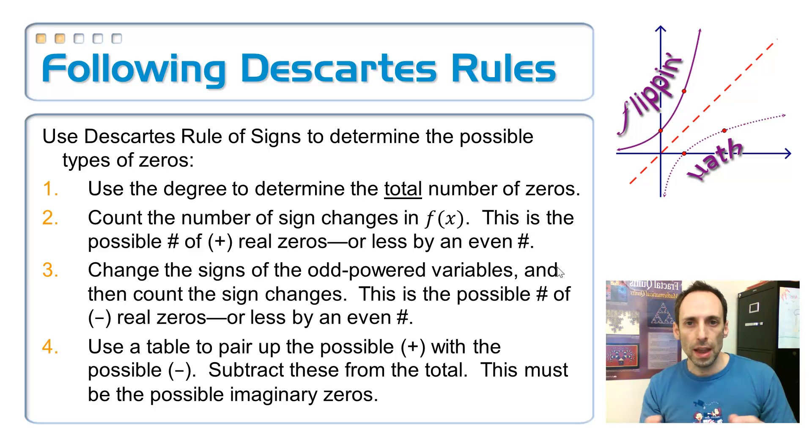And keep taking two away from it until you have none left. So for example, if you count up and you get three sign changes, take two away from that, I get one. And I stop there, because if I took two more away from that, I'd have negative one. If I did all of this and I had four sign changes, take two away from that, I get two. Take two away from it again, I get zero. And those would be your possibilities.